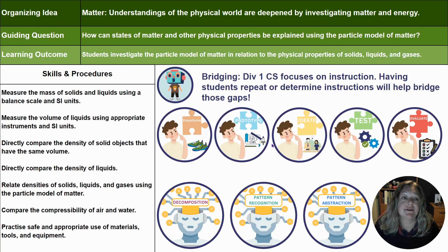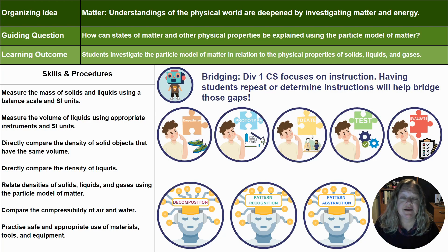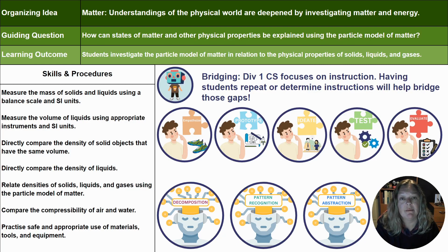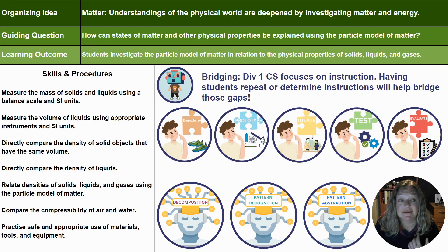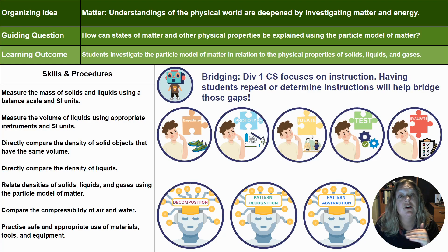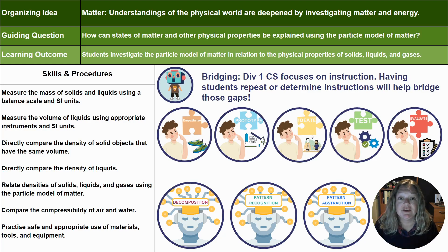Most of the other skills and procedures in Matter don't necessarily make a quick natural connection to computer science skills, because in grade 5 CS we really want students to build block coding and create computational artifacts. We might not see as many connections as in other science topics or lower grades, but by grade 5 we want to be ingraining the design thinking process and computational thinking process into as much as we can — any skills and procedures you're covering.